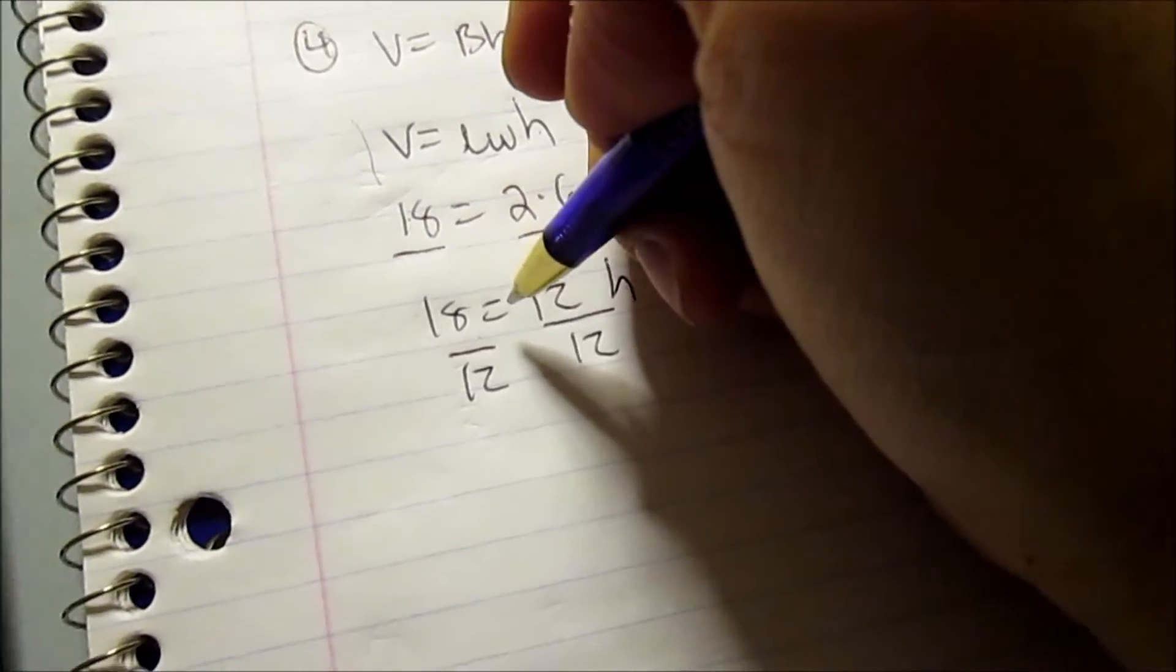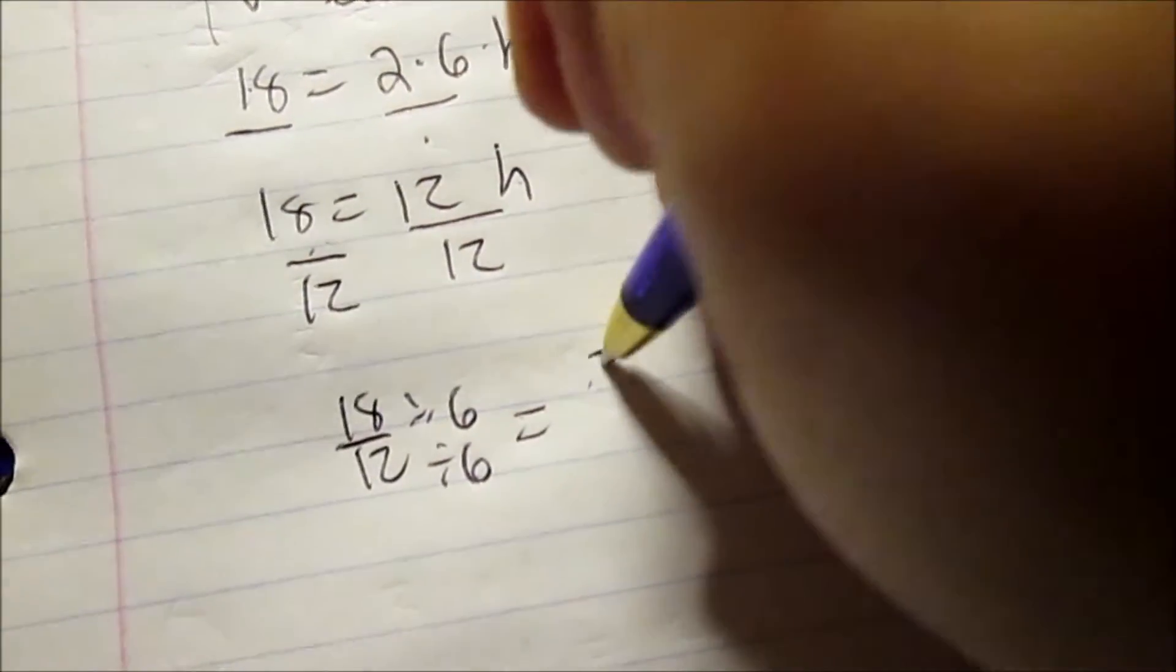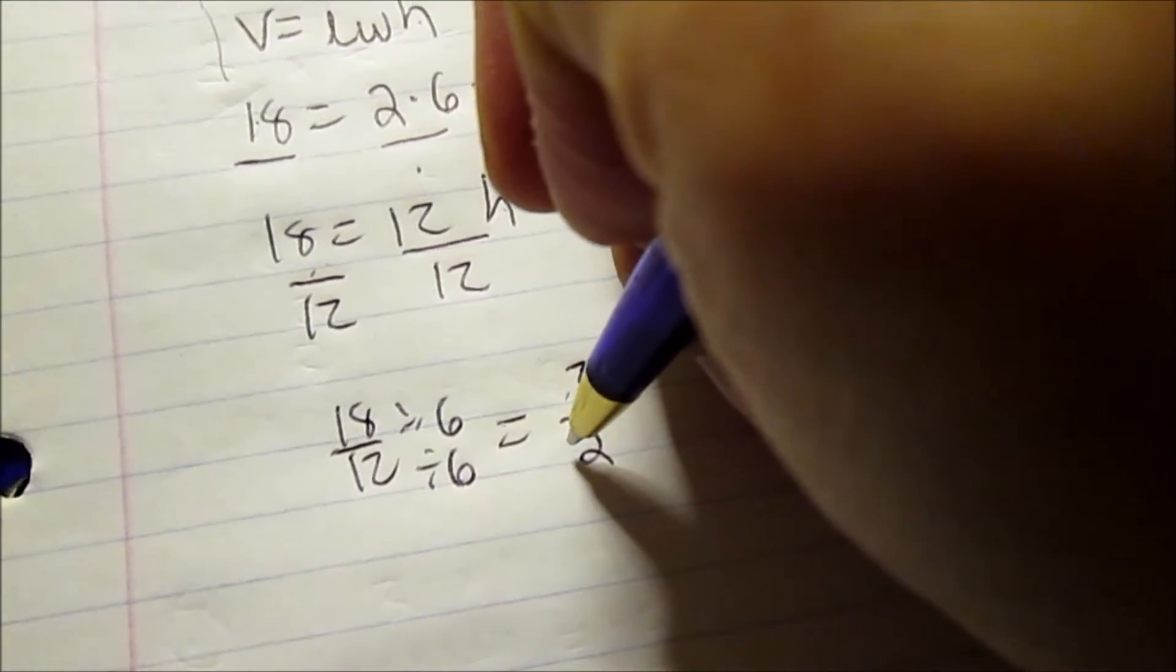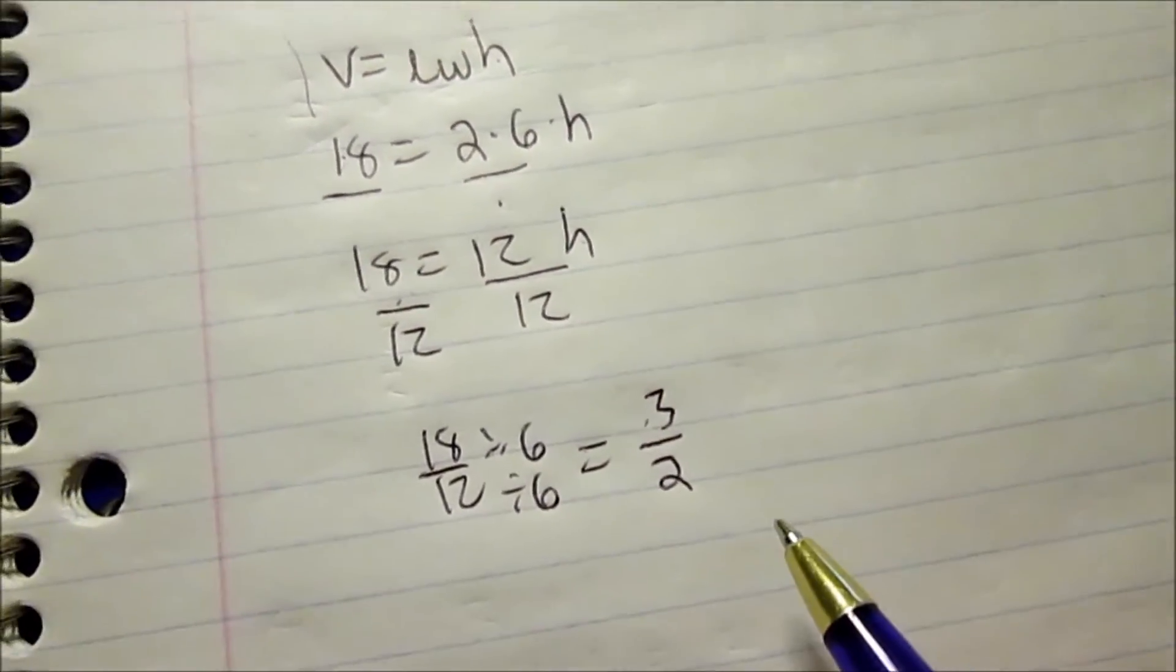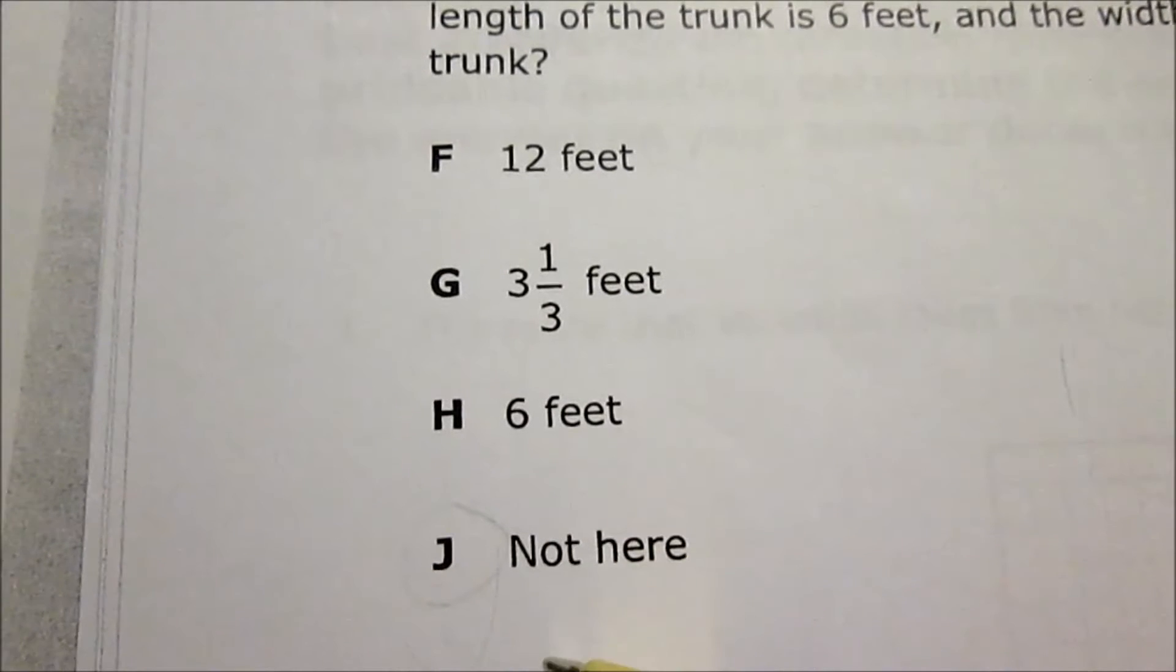What I can do is just simplify 18 over 12. They can both be divided by 6. So 18 divided by 6 is 3, and 12 divided by 6 is 2. 3 over 2, which is... not here.